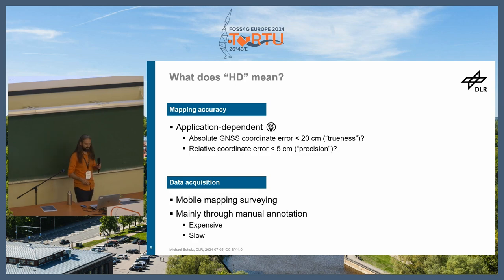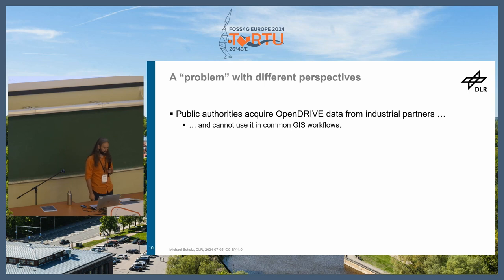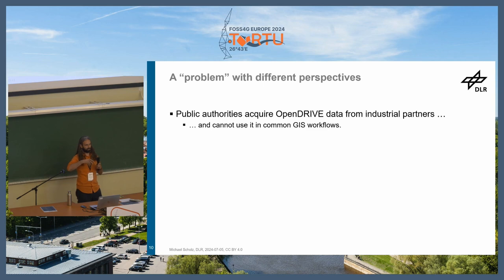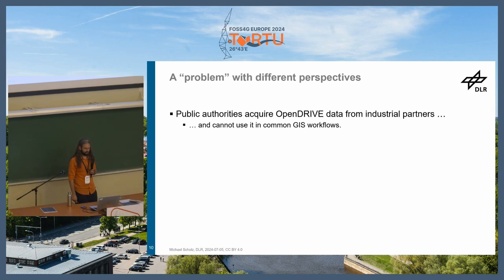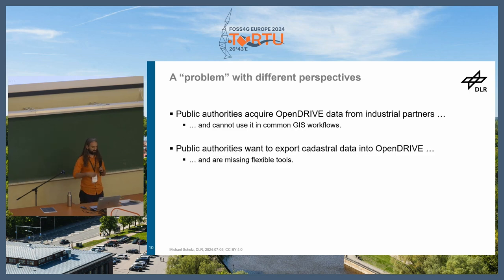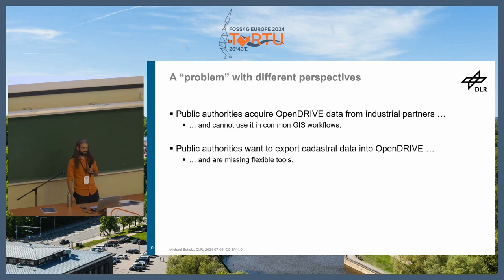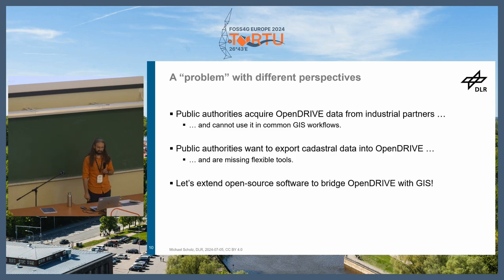Recently I've been involved in many initiatives with public authorities in cities like Hamburg and Munich in Germany, where there is a transition between the automotive engineering domain and public authorities. Public authorities very often use GIS workflows, and OpenDRIVE — an open format standardized by the ASAM organization in Germany — does not fit well into GIS workflows. You either want to get OpenDRIVE into GIS, or you have cadastral data you want to export to OpenDRIVE, and both are non-trivial. We tried to bridge these domains by providing a GDAL driver for the OpenDRIVE format.